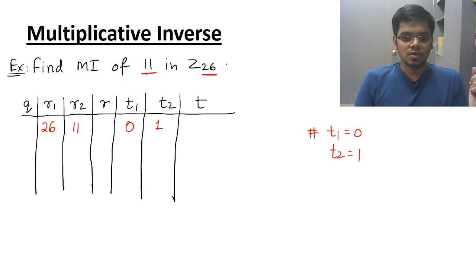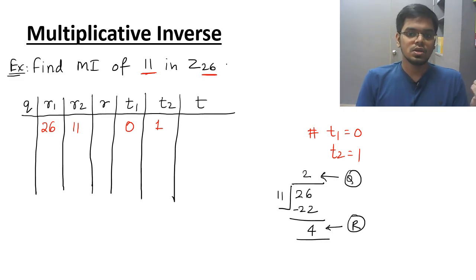Now you have to do the division part when you divide 26 by 11. So 11, 2s are 22. Subtraction. So answer is 4. The quotient part is 2. The remainder part is 4. So quotient is 2, remainder is 4.